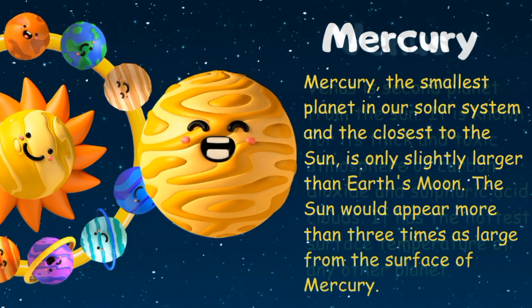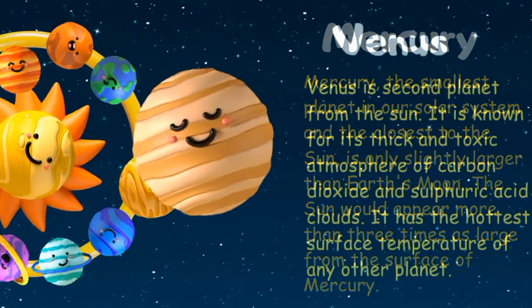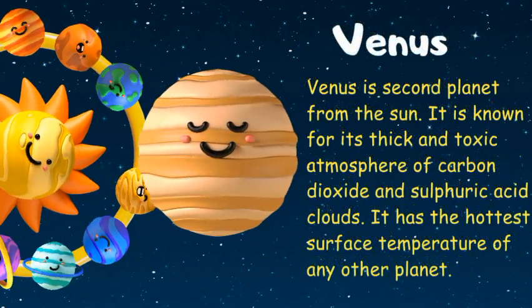Venus is the second planet from the sun. It is known for its thick and toxic atmosphere of carbon dioxide and sulfuric acid clouds. It has the hottest surface temperature of any other planet.